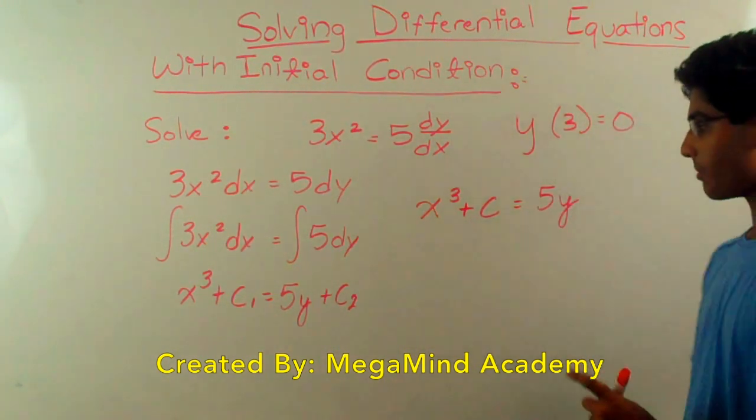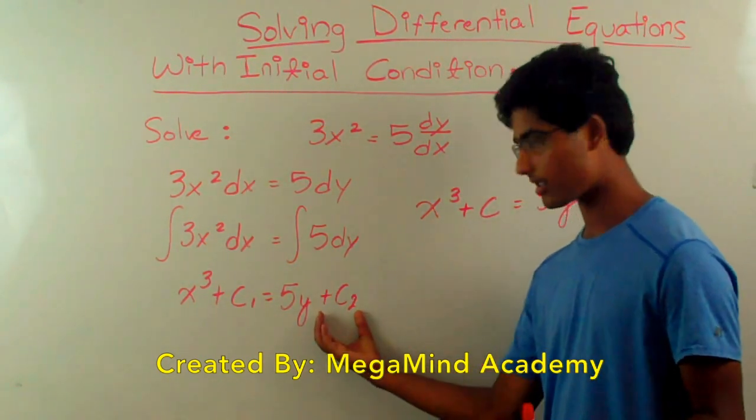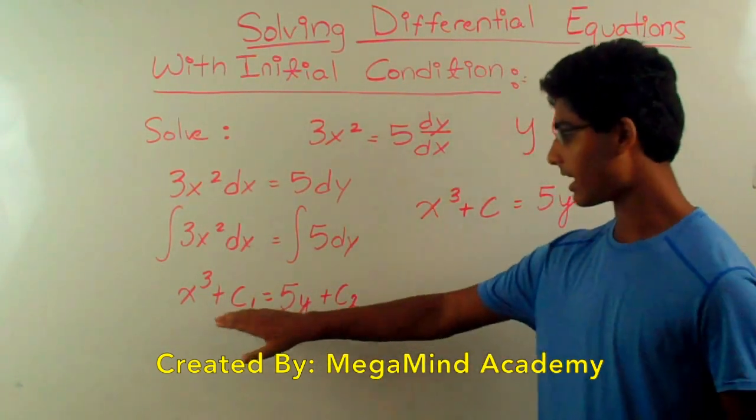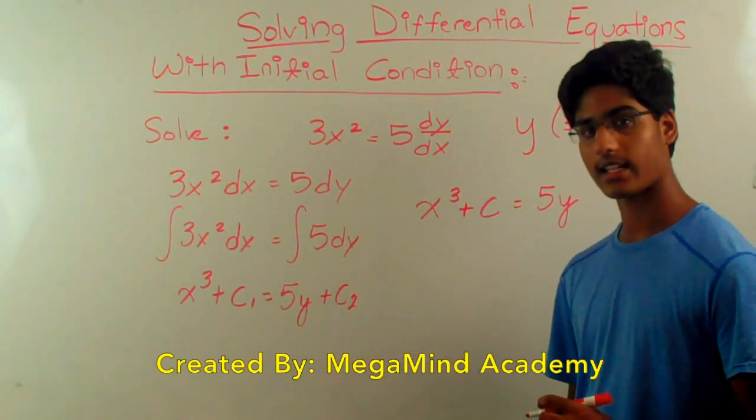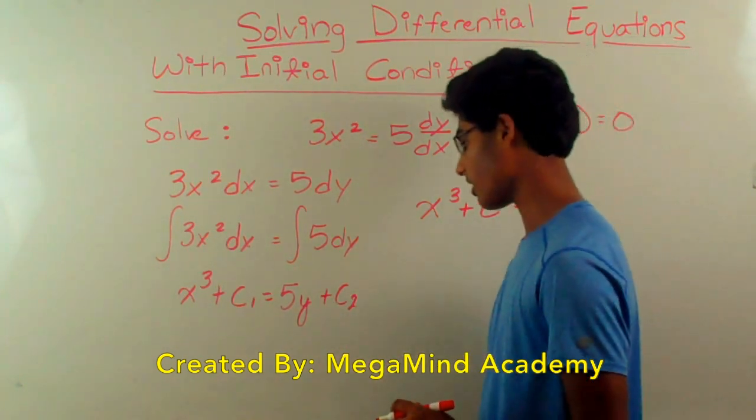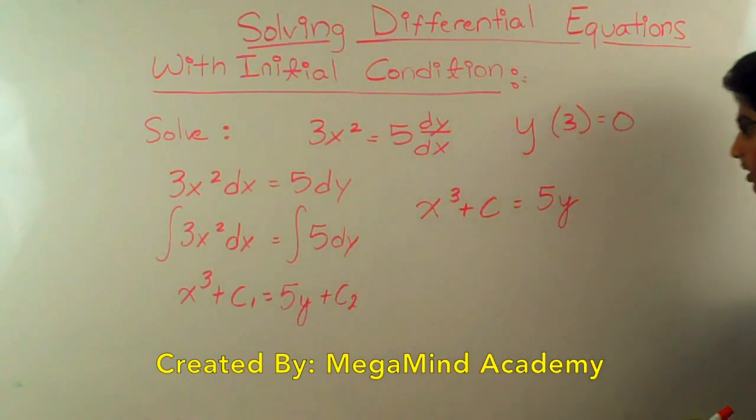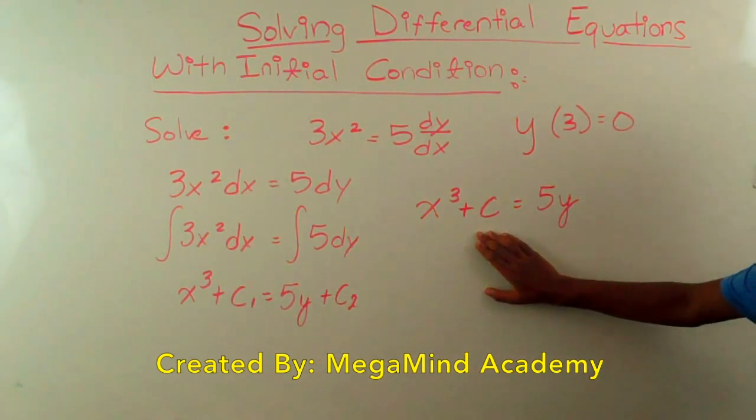So once again, that step is we're just taking this arbitrary constant out because we know that one arbitrary constant minus another arbitrary constant is going to land us with another arbitrary constant. So it doesn't really matter. We just need to have one arbitrary constant somewhere.